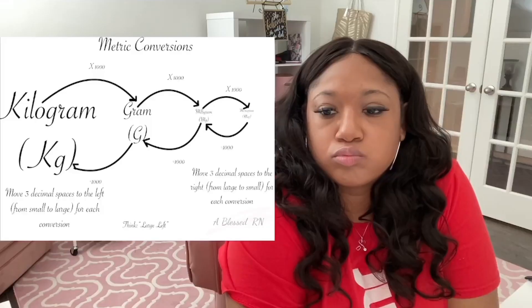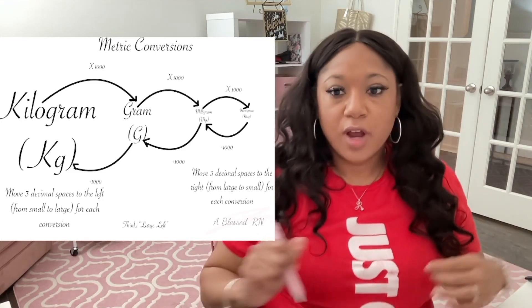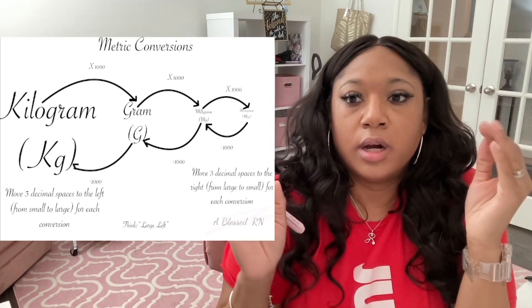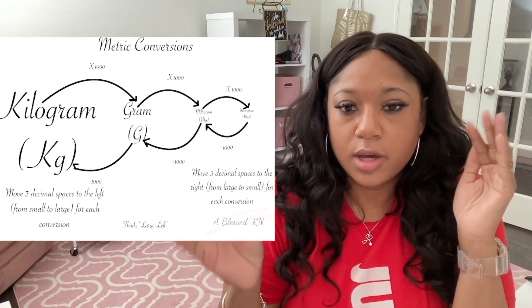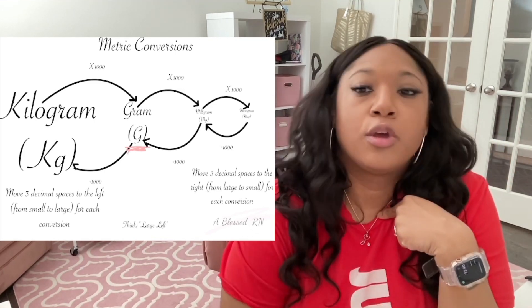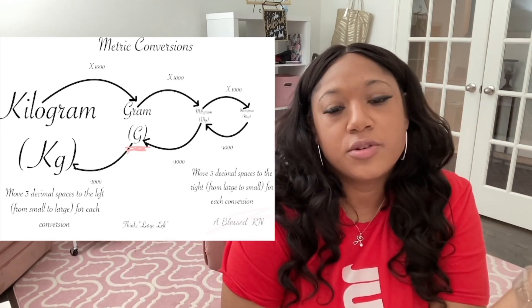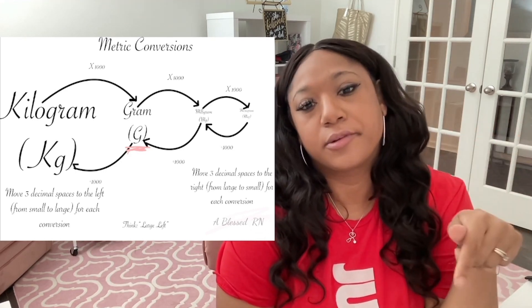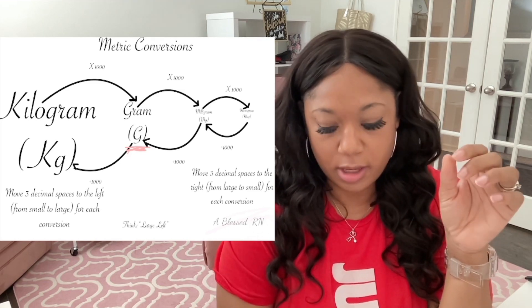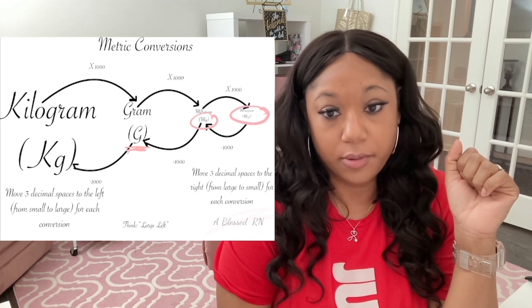Let's talk about metric conversions. In the metric system you have your base, and then you're going to be going either from your base to a larger unit — which would be a kilogram — or you'll be going to a smaller unit, which would be a milligram, or an even smaller unit, which is a microgram.